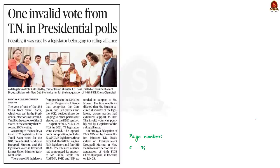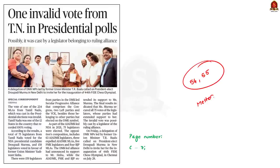This news article talks about the presidential elections. In the presidential election, there was one invalid vote from Tamil Nadu. Tamil Nadu was one of the 12 states in the country that recorded 100% voting. The vote of one of the 234 MLAs from Tamil Nadu cast in the presidential election was considered invalid. In our discussion today, we will cover the methodology used for voting in presidential elections — that is, proportional representation by means of single transferable vote.